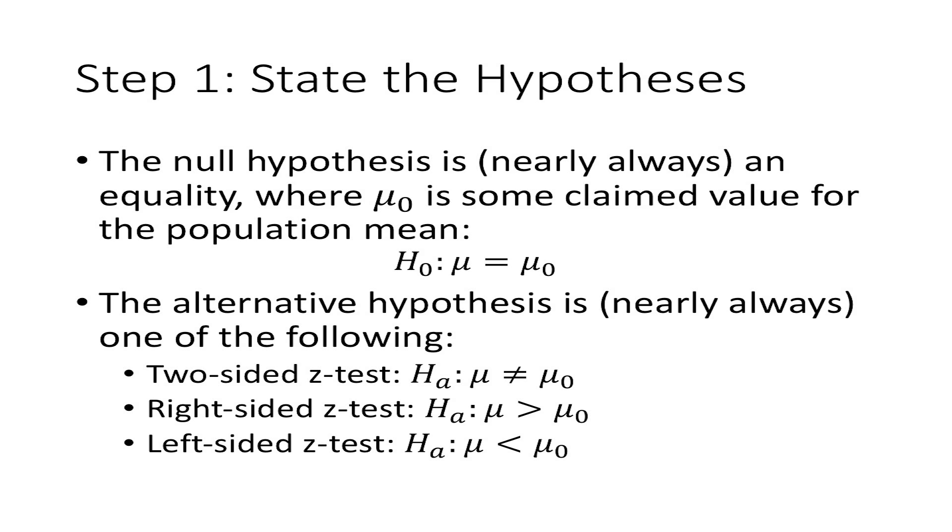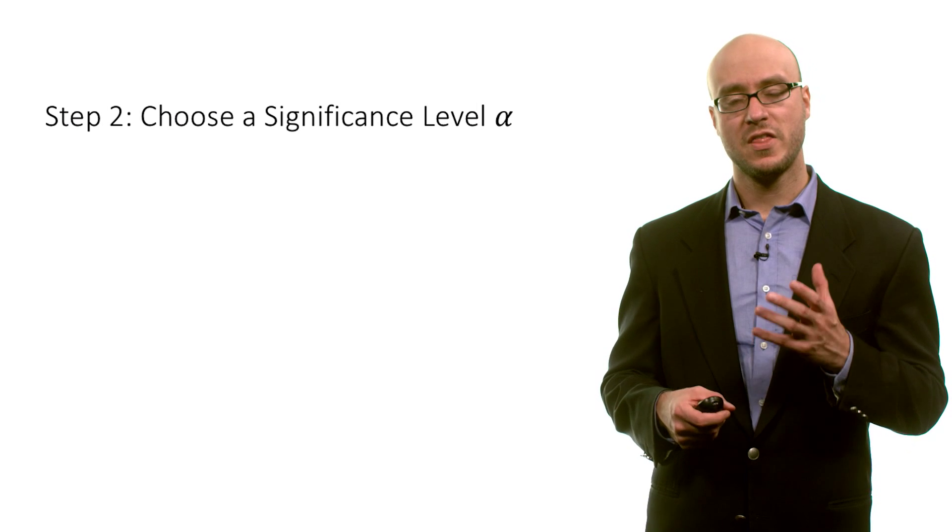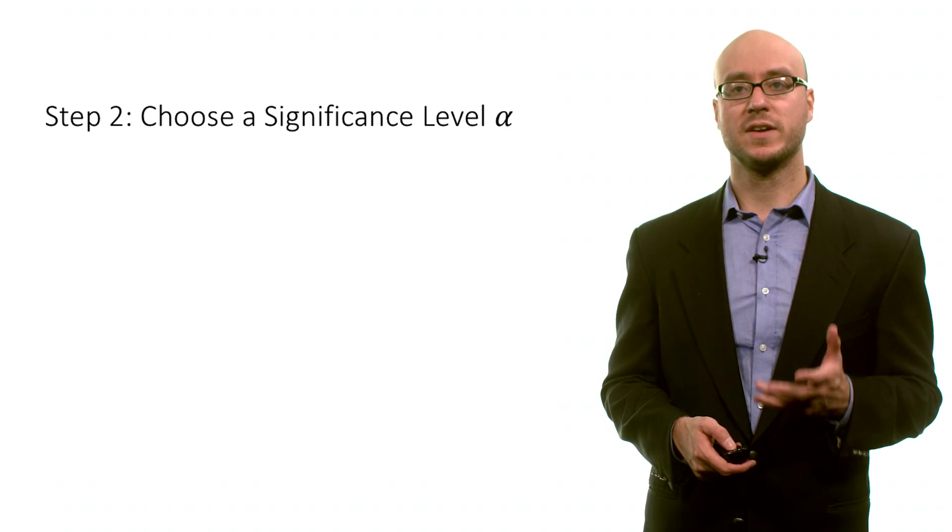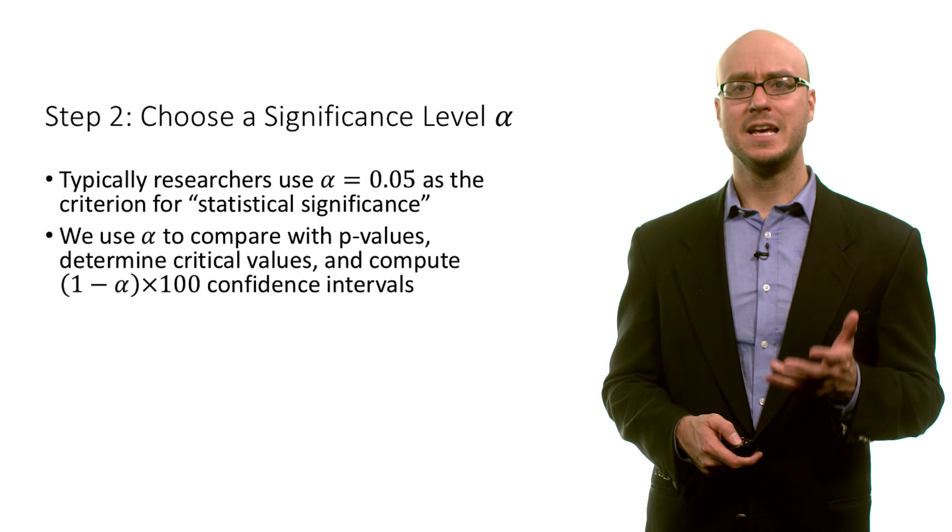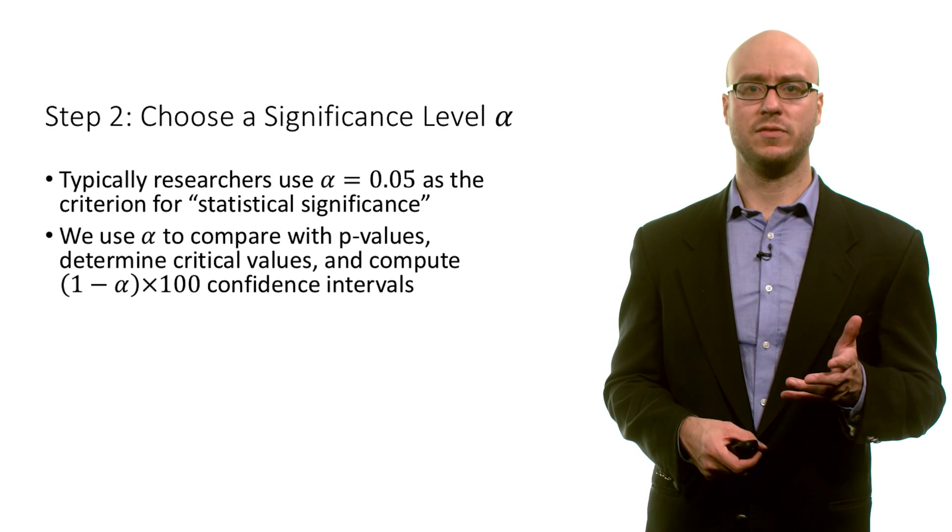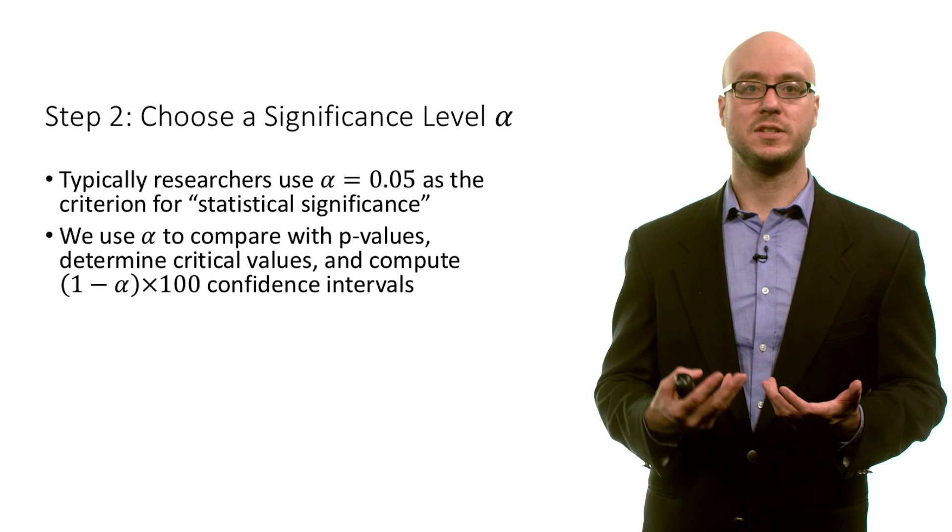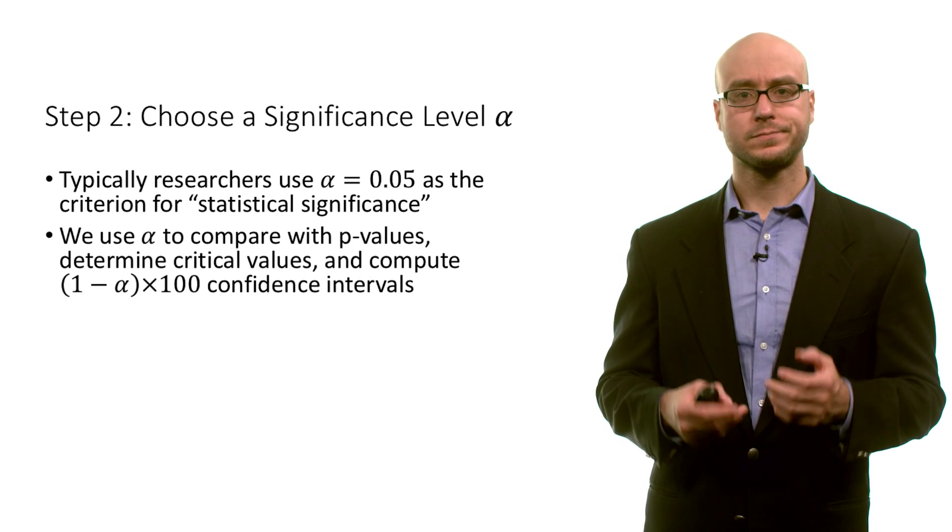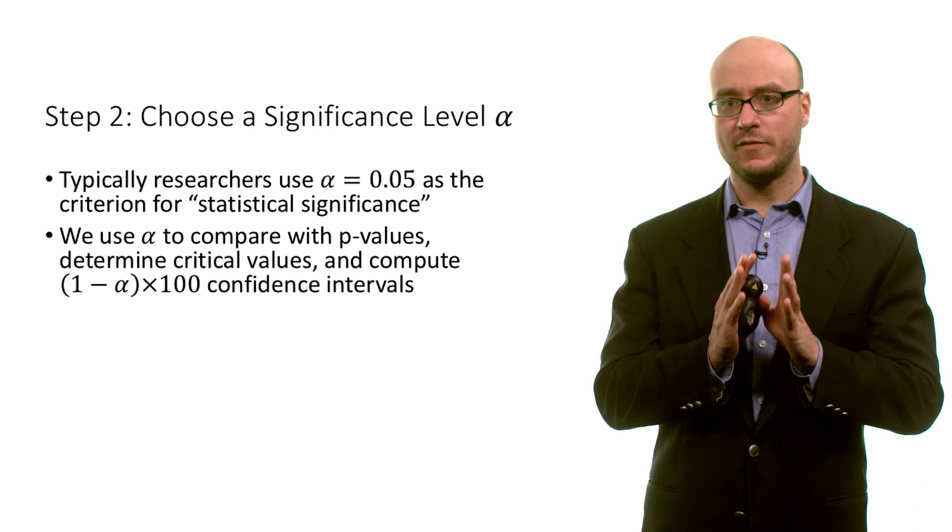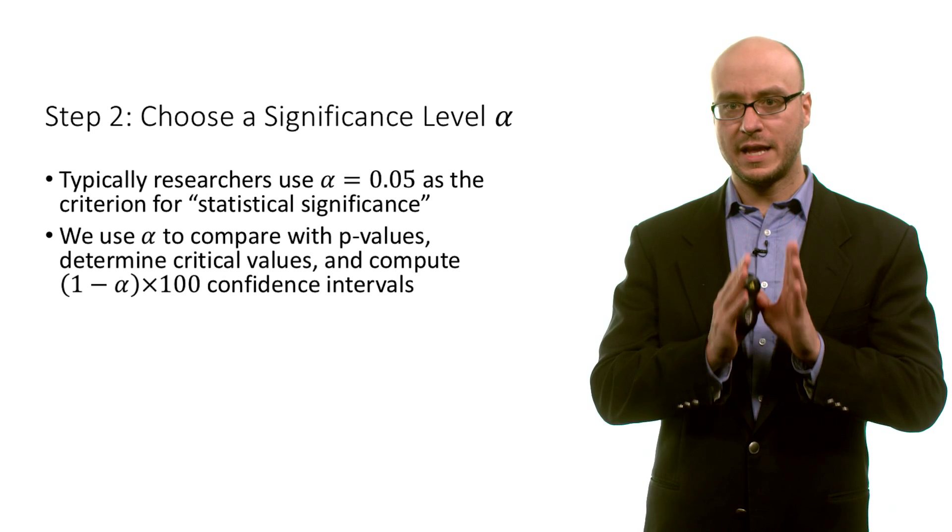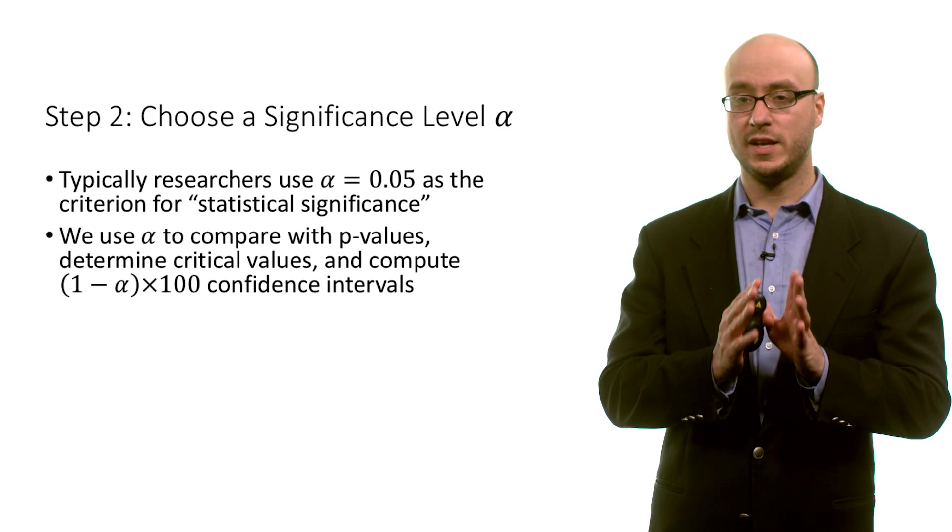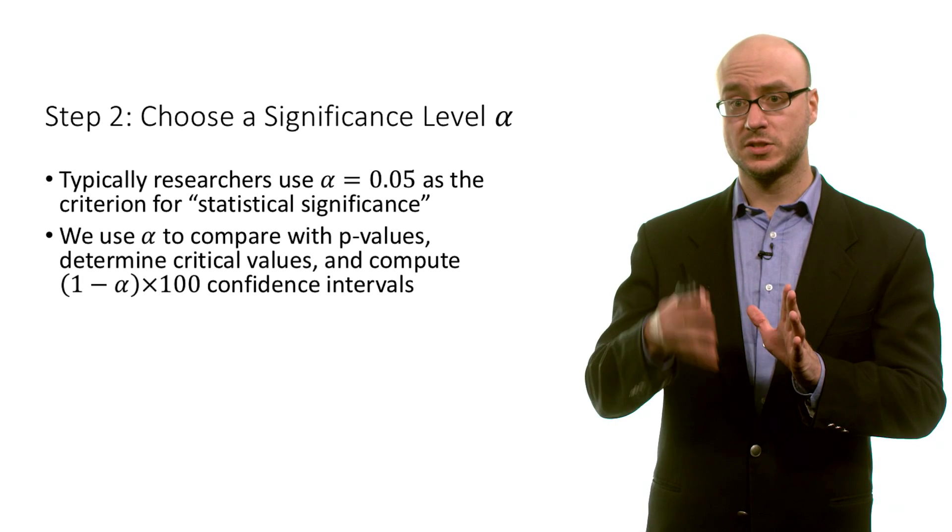Then you choose a significance level alpha. Again, typically, researchers use alpha of 0.05. And this is the criterion for what we call statistical significance. This is very important, because our level of alpha determines, in some sense, our conclusions.